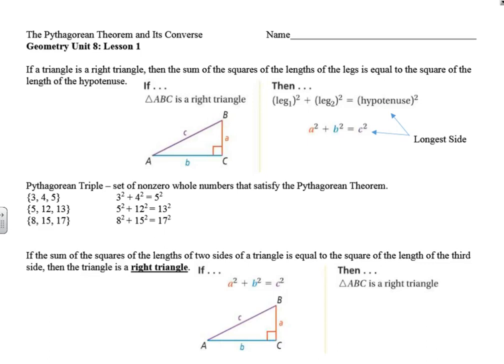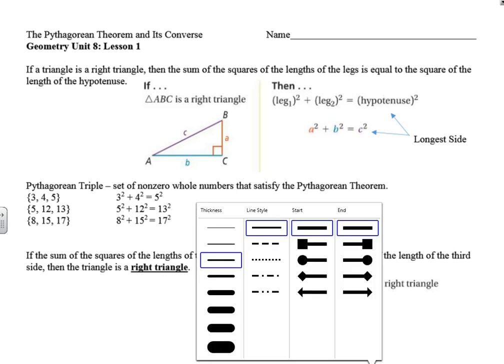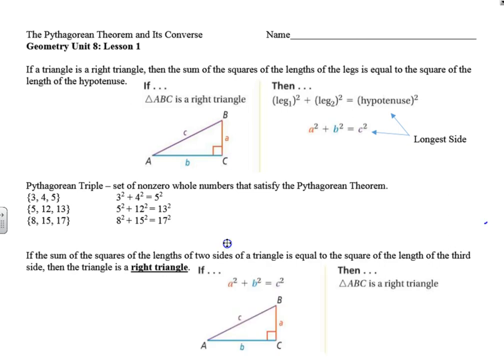Hello geometry students, Mr. Zazic back and better than ever. We're rolling along and moving into unit eight. In unit eight we're going to be looking a lot at right triangles and trigonometry, but we're going to begin today by talking about the Pythagorean theorem and its converse. So we want to answer the question: what is the Pythagorean theorem and its converse, and how do we use it?